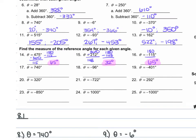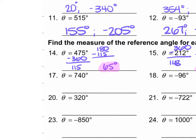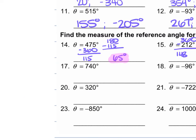For number 17, we're given 740 degrees. If we take 740 and subtract 360, we get 380. From here we take 380 and subtract 360, giving us 20 degrees. The 20 degrees is a positive acute angle, so that's our answer.